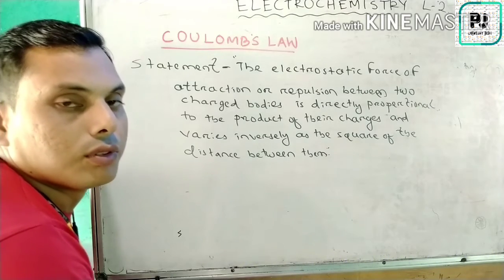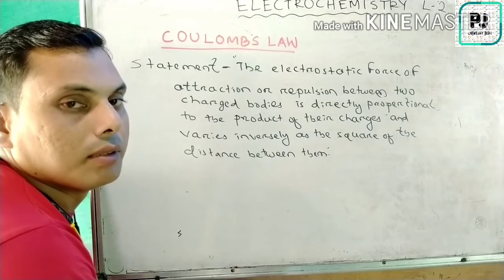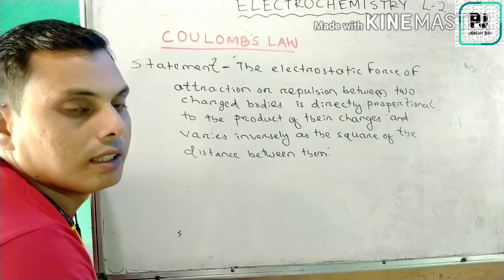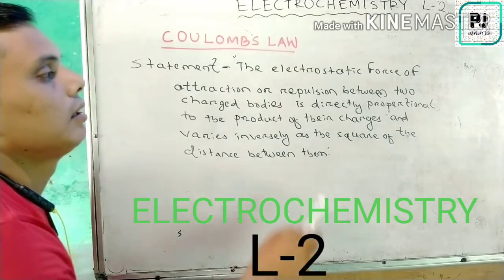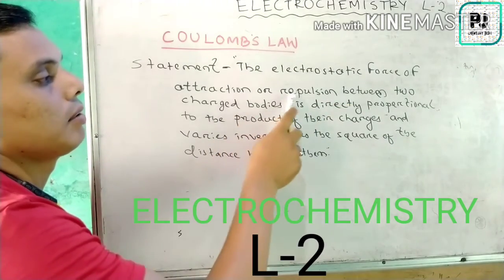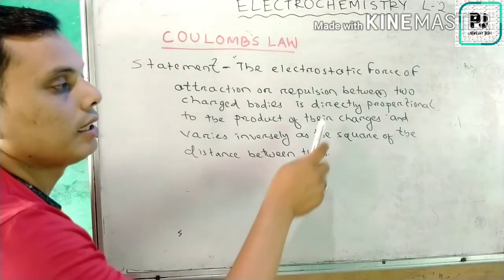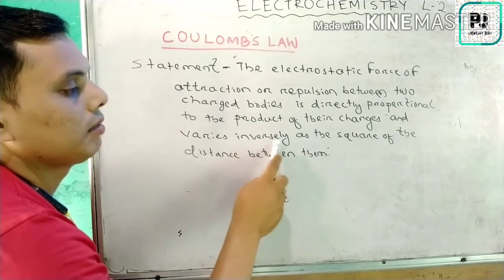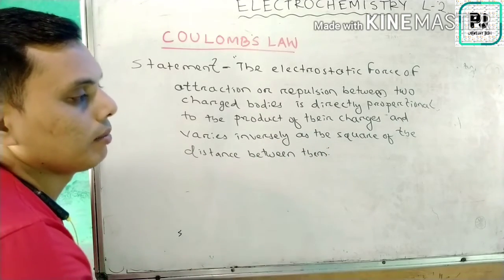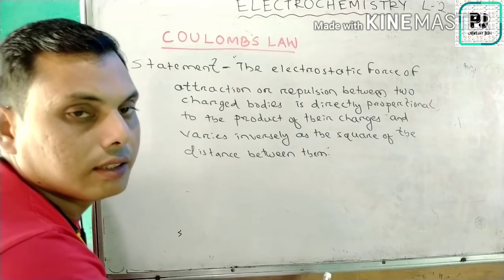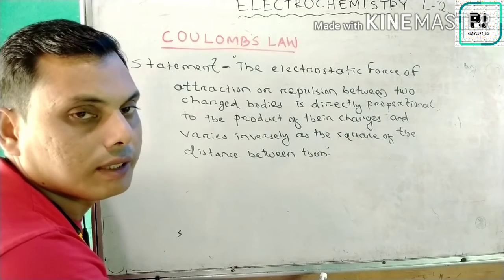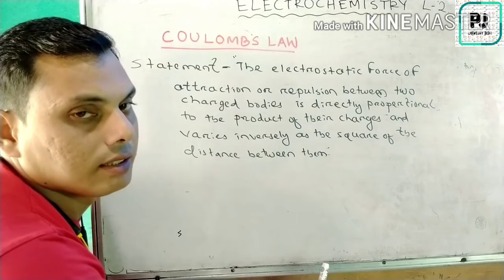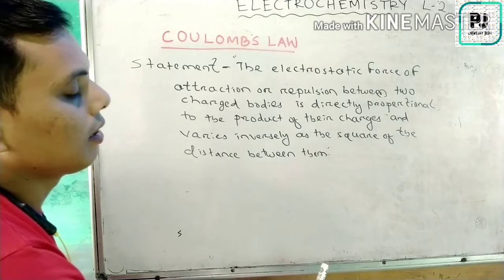The statement of Coulomb's Law states that if we take two charged bodies that have a force of attraction or repulsion, and they are separated by some distance, then the electric force of attraction or repulsion between them depends on their charges and distance. We consider three things: the force, the charges, and the distance.